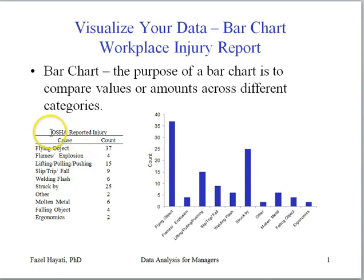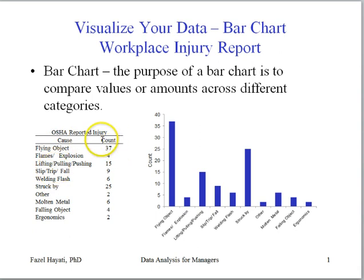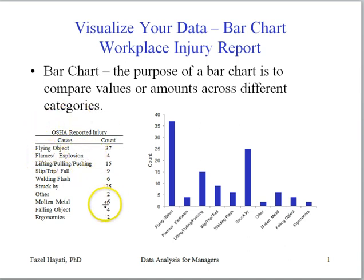Let's say we've collected data on OSHA reported injuries in our workplace. The categories are the causes of injury, and the count. It is always much better and easier to communicate if we can visually describe the data in some form of a chart.